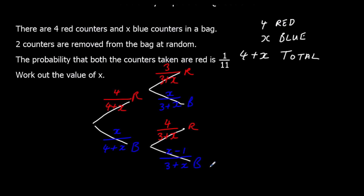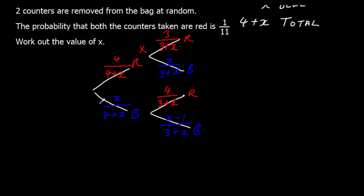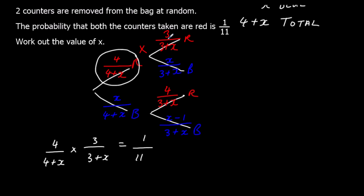The probability that both counters taken are red is 1/11. To get the probability of red then red, we multiply the probability of getting a red first by the probability of getting a red second. So: [4 / (4 + x)] × [3 / (3 + x)] = 1/11. We are multiplying across the branches, so the probability of red then red equals 1/11.